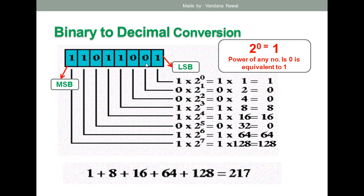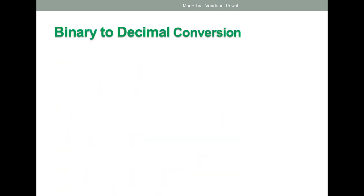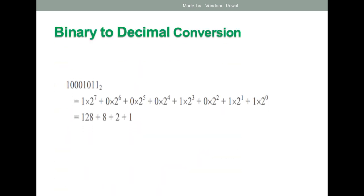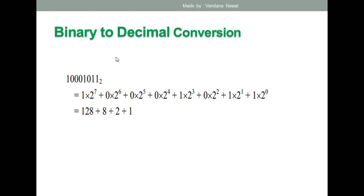So the decimal equivalent of this binary number is 217. Make sure you solve this example yourself before moving on to the next one. Now let's take one more example for converting a binary number into decimal.